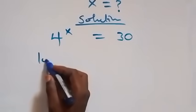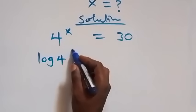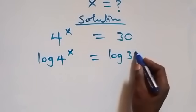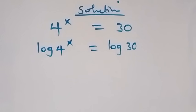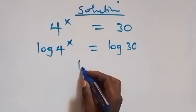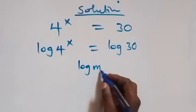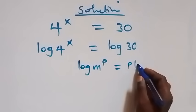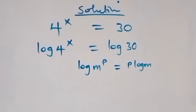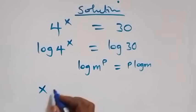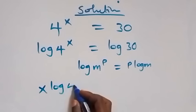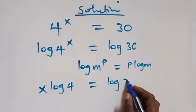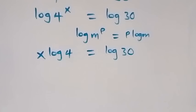We have log of 4 raised to power x equals log 30. Then we apply the power law of logarithms: log m raised to power p equals p log m. So what we have becomes x log 4 equals log 30.